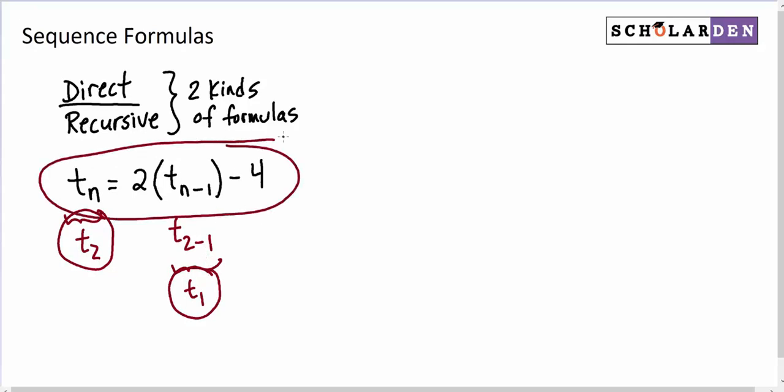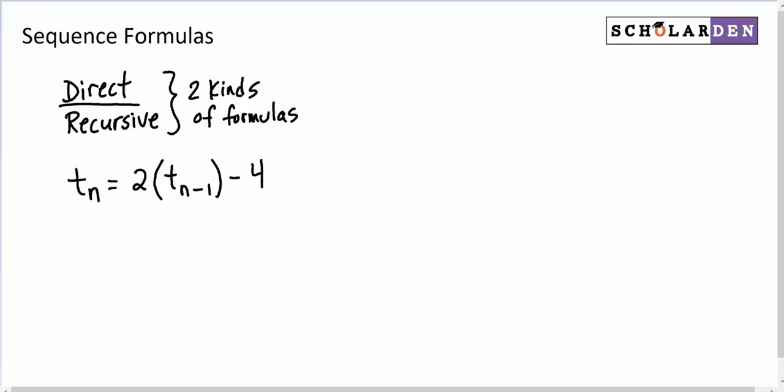But notice this does not tell us the first term. So with recursive formulas, we need to know one of the terms at least. The first term is kind of nice, but we could actually just know any term. So in this problem, let's say we knew that the second term, T₂, was 13.